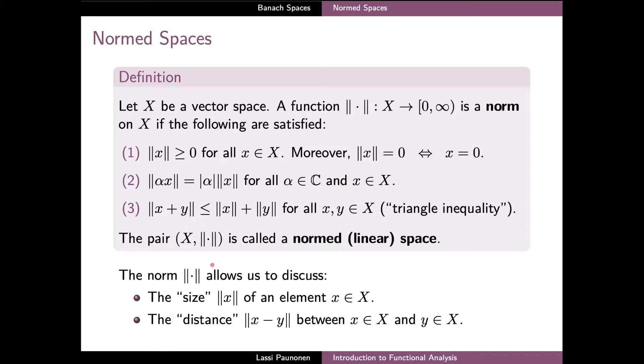And the pair consisting of the vector space X and the norm satisfying these axioms is then called a normed space. The main uses for a norm are that it allows us to in a sensible manner define and discuss the size of an element, namely the norm of an element X on a vector space, as well as the distance between two elements defined as the norm of X minus Y.